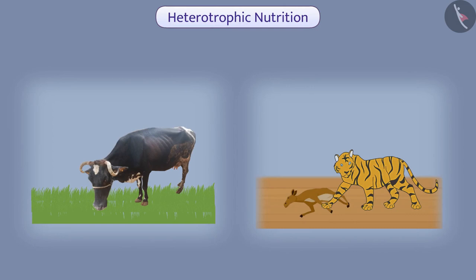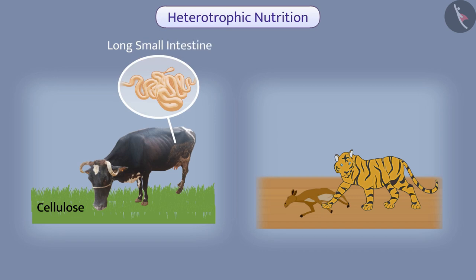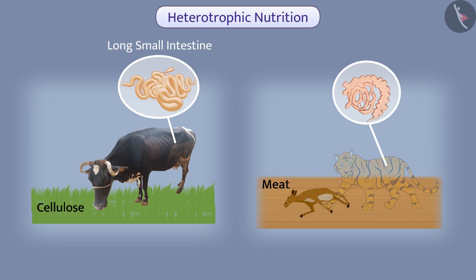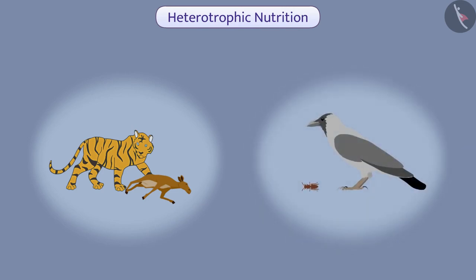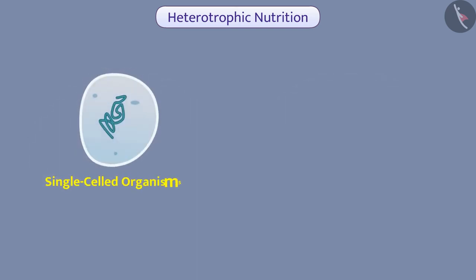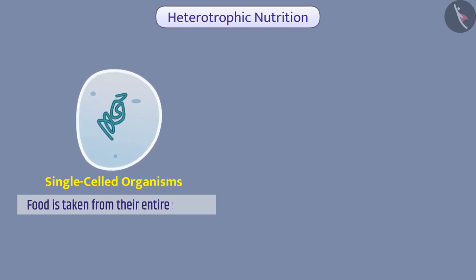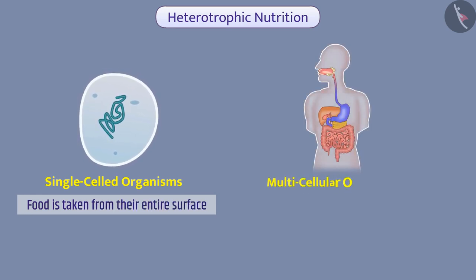To digest herbivore food such as cellulose, organisms like cows have a long small intestine. Since the digestion of meat is simpler, animals like tigers have a short small intestine. Some organisms get their nutrition from dead organisms, whereas some get their food from living organisms. In single-celled organisms, food is taken from their entire surface, while multicellular organisms have an advanced system.